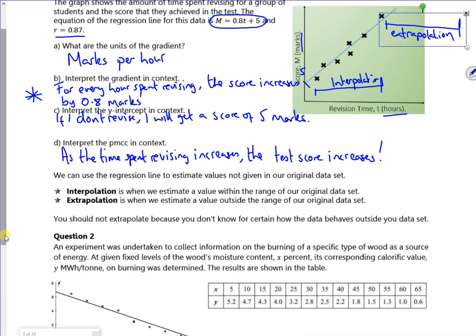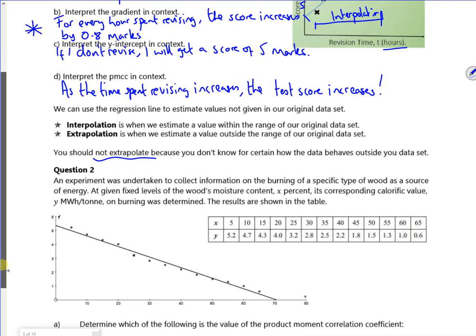So it says here, you should not extrapolate because you don't know for certain what's going to happen. People get paid millions and millions of pounds per year for extrapolating to see what happens next. So where all the big money is.